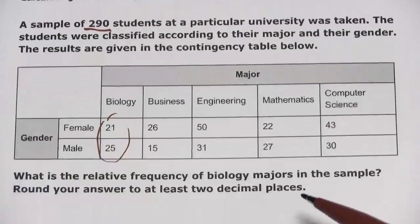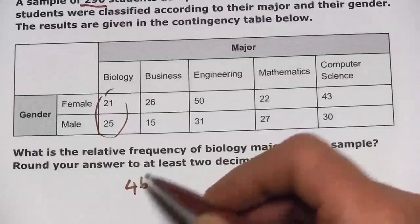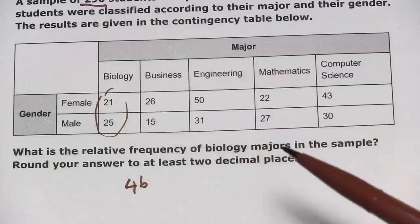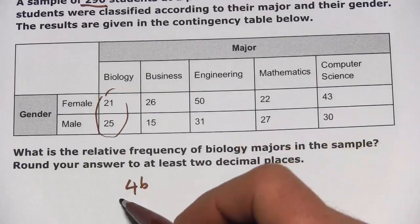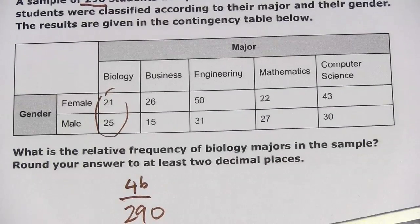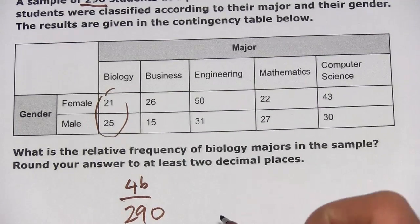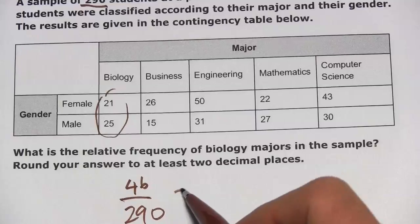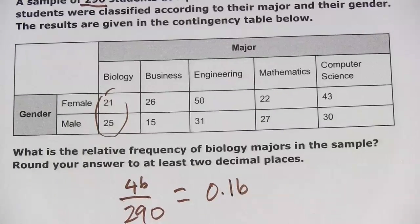That total would be 46. And then for the relative frequency, you just divide by the sample size — so divide by 290. So 46 divided by 290 is 0.158 something, and since they want two decimal places, we'll call this 0.16.